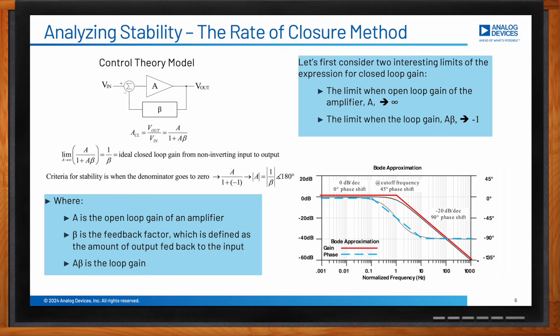There are two interesting limits. When A goes to infinity, the ideal closed-loop gain reduces to simply 1/β. The second limit is when the loop gain Aβ approaches −1: the denominator tends toward zero, the closed-loop gain approaches infinity, and the circuit becomes unstable with sustained oscillations. This is equivalent to when the magnitude of A equals the magnitude of 1/β at a phase shift of 180 degrees.